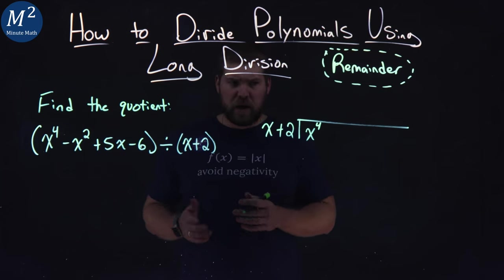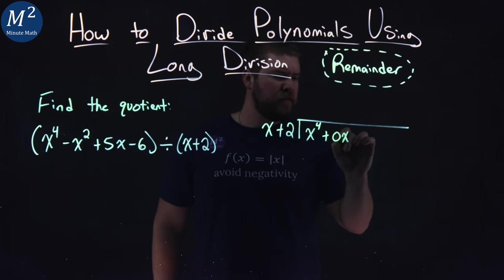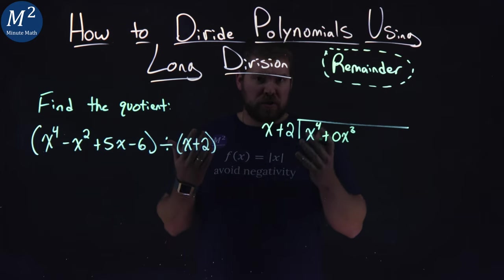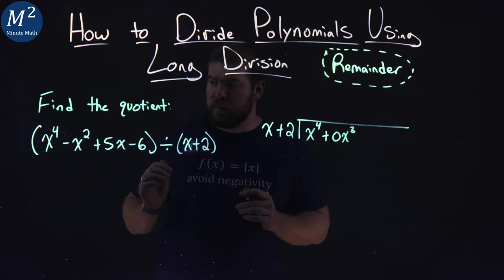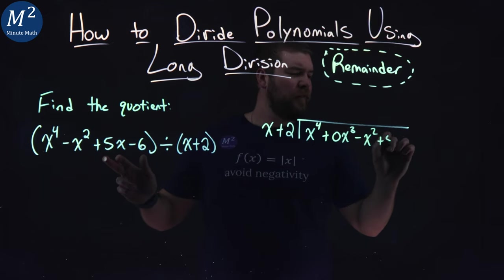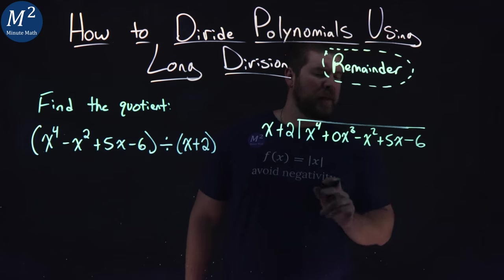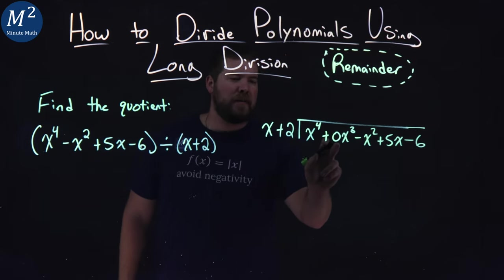I'm going to need to put a place value here of the third power, but I don't want to change the problem at all. So to do that, I have plus 0x to the third power, which is just 0, doesn't change the problem. But minus x squared comes in, then we have 5x and minus 6. You'll see why in a minute, why that place value is important.